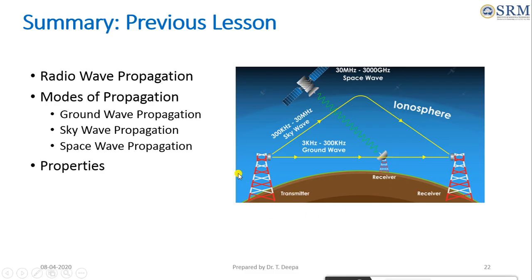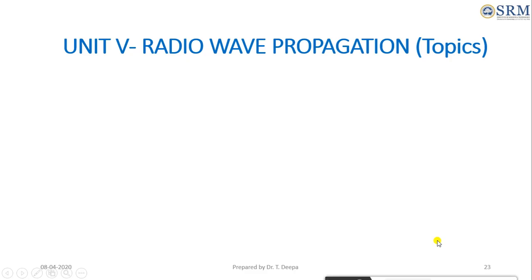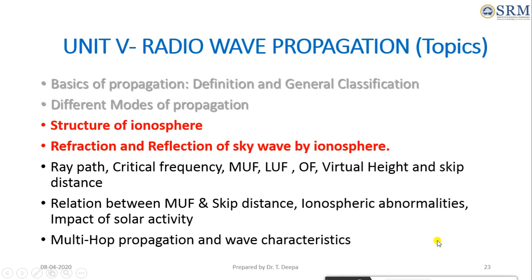Ground wave propagation is used for low frequency range transmission, with frequency range from 3 kilohertz to 300 kilohertz. Sky wave propagation is used for long distance communication, with frequency range from 300 kilohertz to 30 megahertz. Space wave propagation is used for line of sight communication, with frequency range from 30 megahertz to 3000 gigahertz.